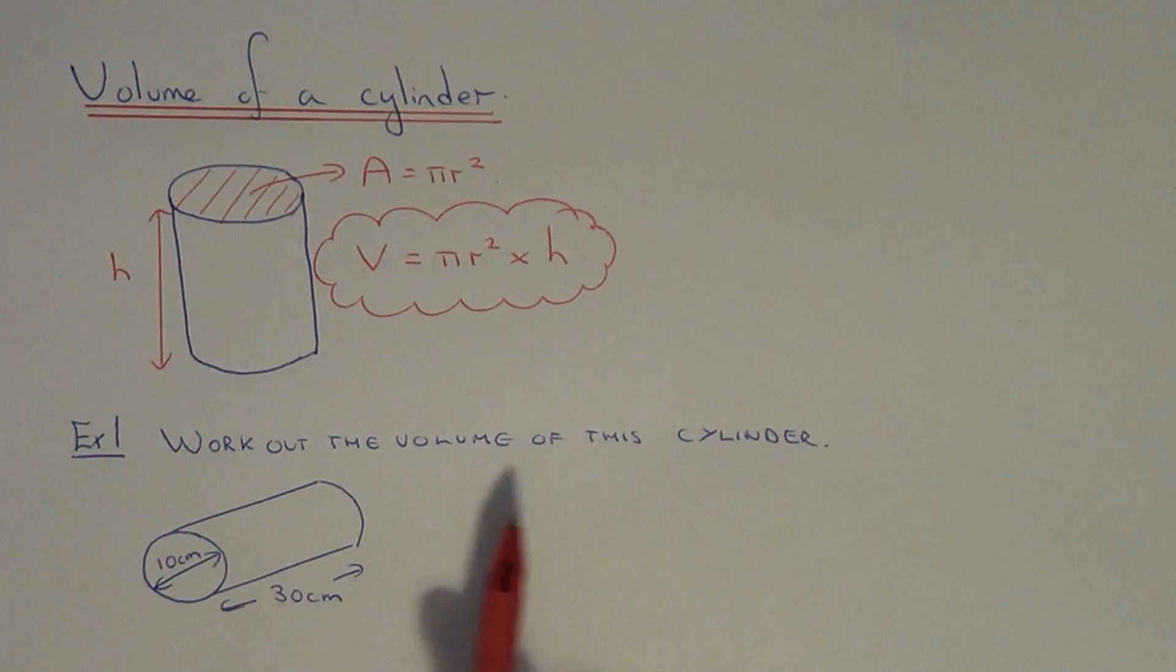Let's apply this to this example here. We have to work out the volume of the cylinder. The cylinder has a diameter of 10 centimeters and has a length of 30 centimeters.